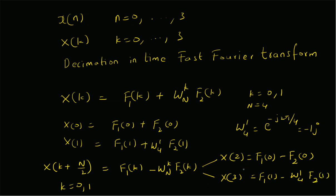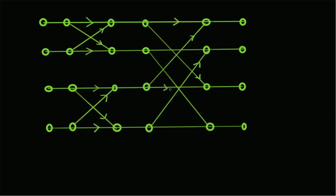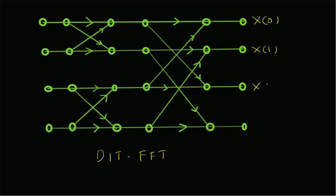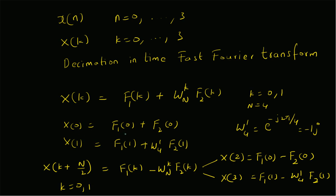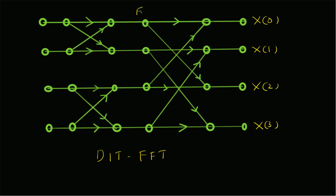Now let us map these equations onto the butterfly diagram. For the 4-point DIT FFT algorithm, the inputs will be x[0], x[2], x[1], x[3], and the outputs will be X[0], X[1], X[2], and X[3] in the correct order. The inputs for this stage are F1[0], F1[1], F2[0], and F2[1].